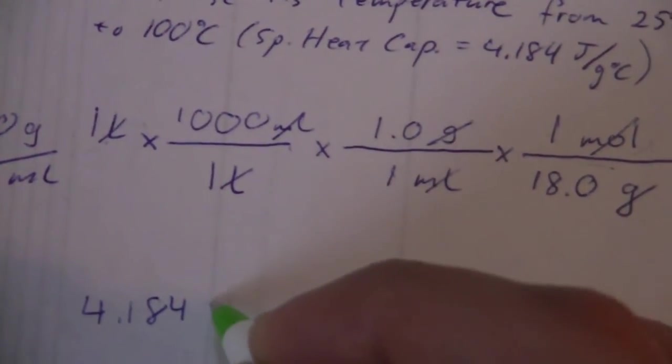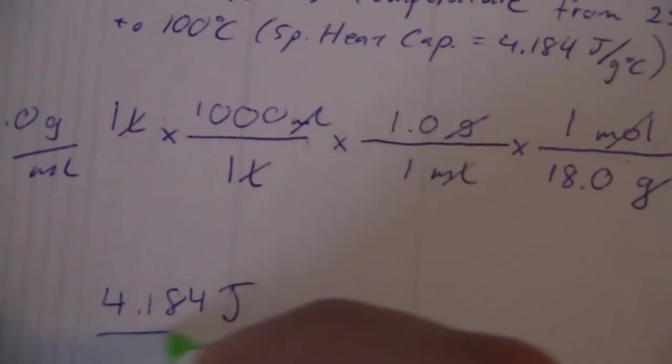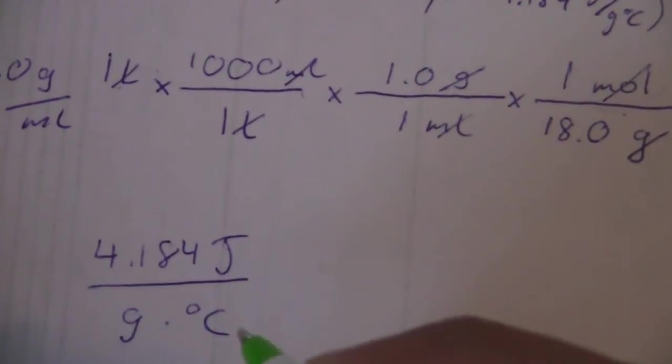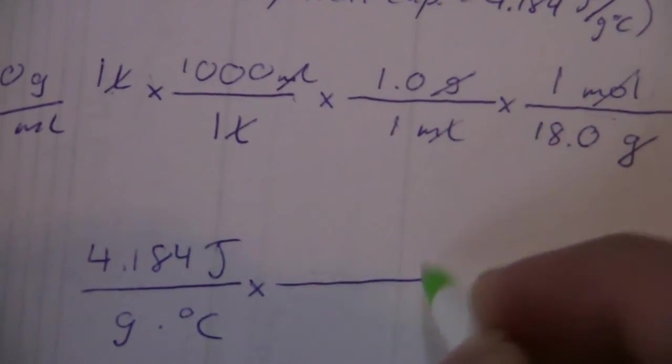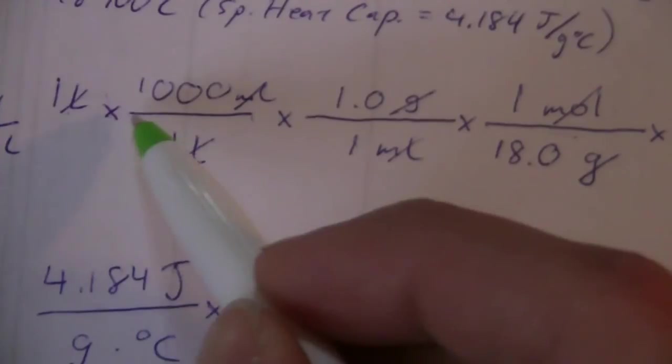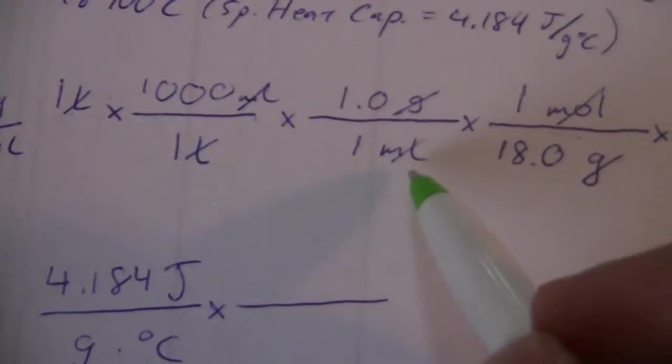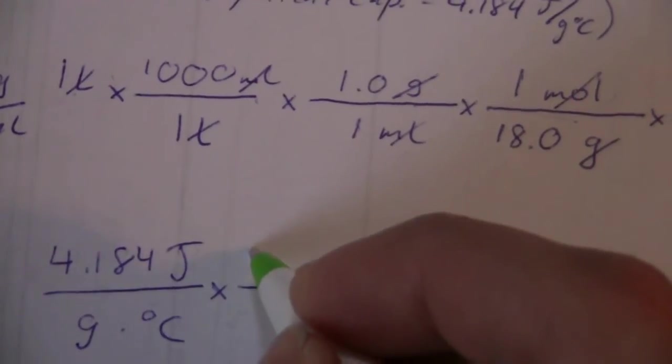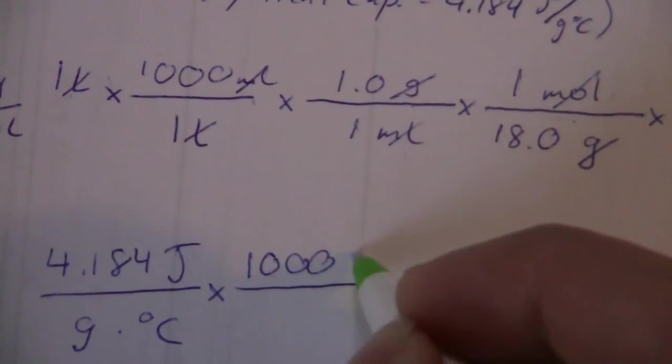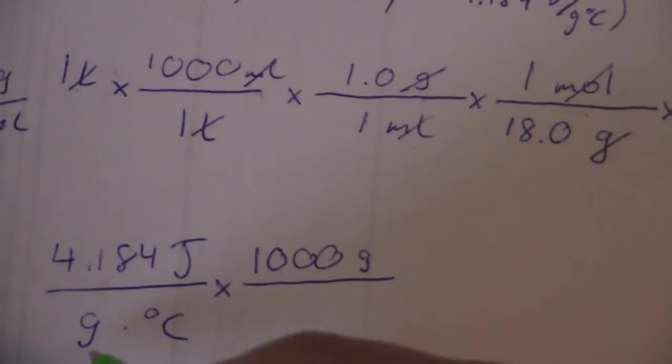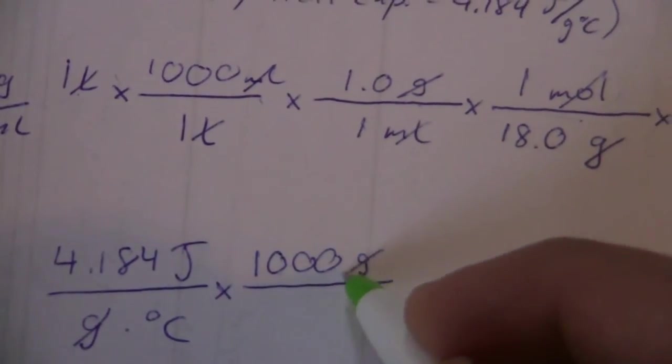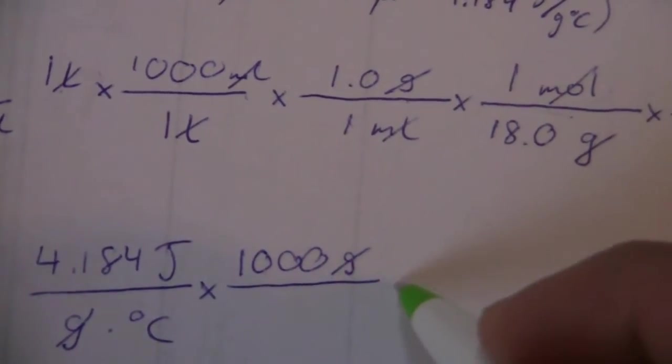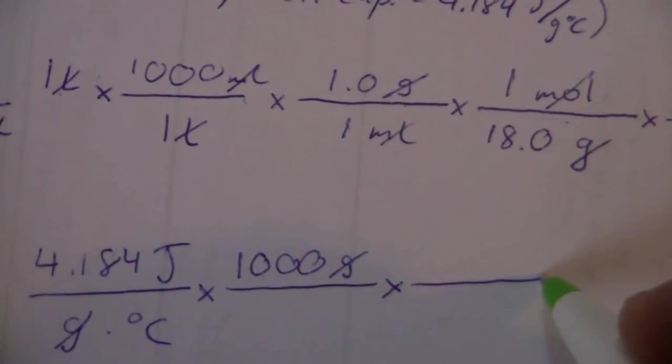4.184 joules per gram degree C times, we said it's 1 liter, 1,000 milliliters, 1 gram per milliliter, so we do that multiplication. And we have 1,000 grams of the water. Now the grams cancel. And what else do we need, the 75 degrees C.